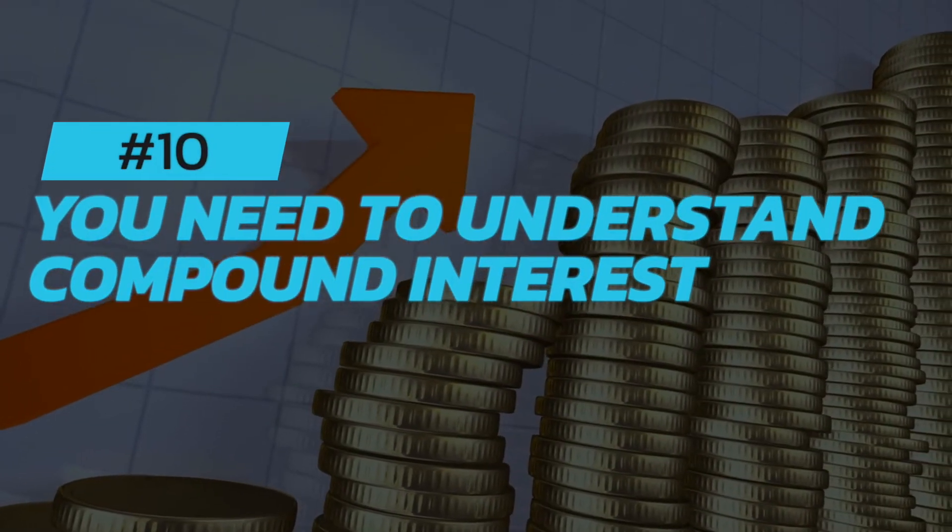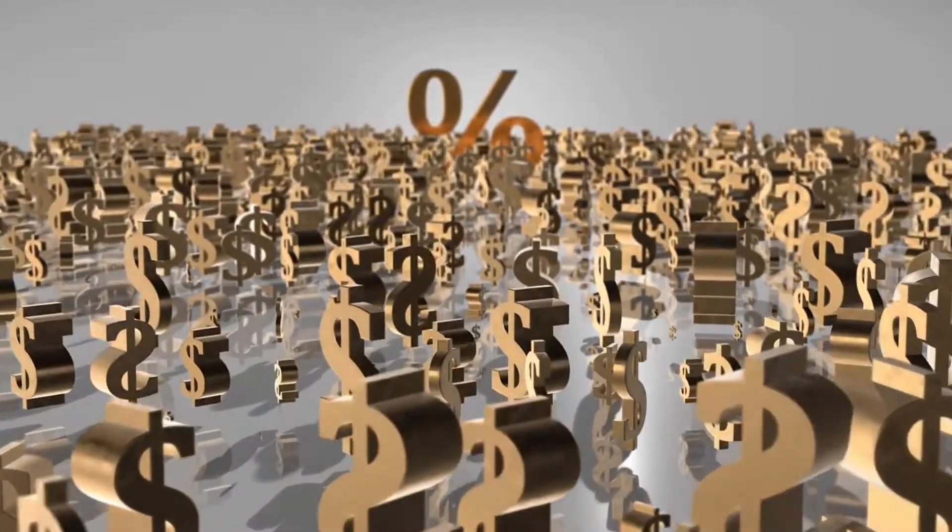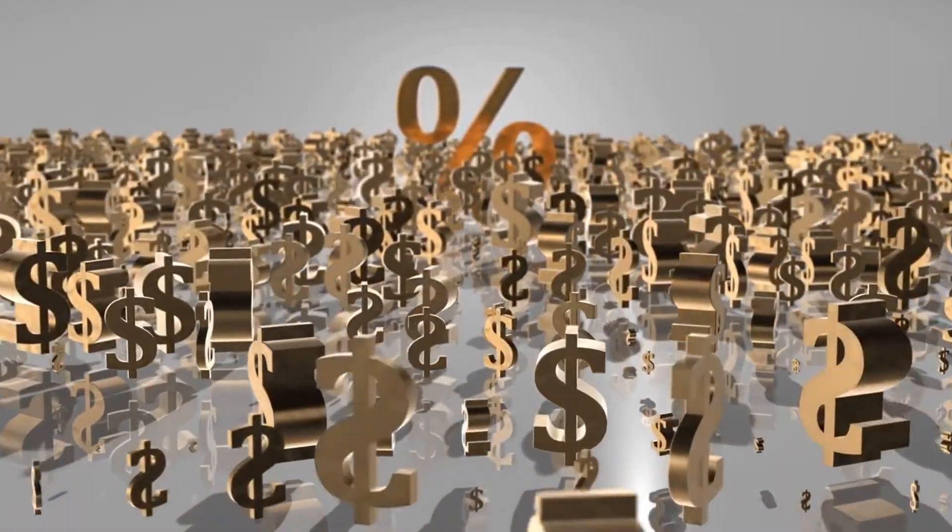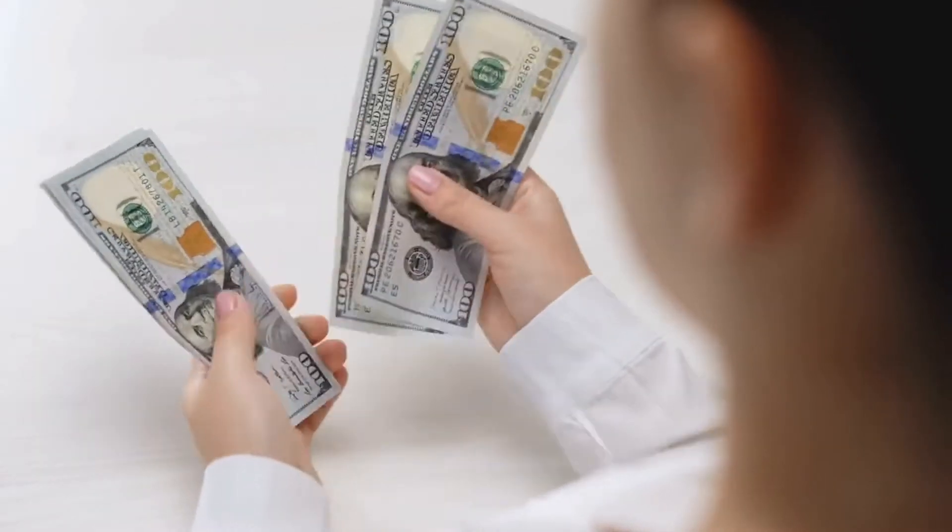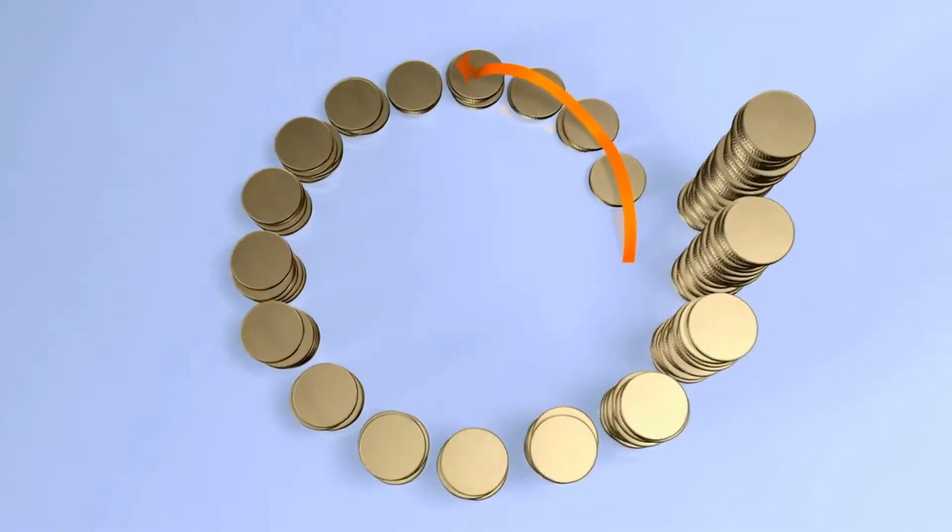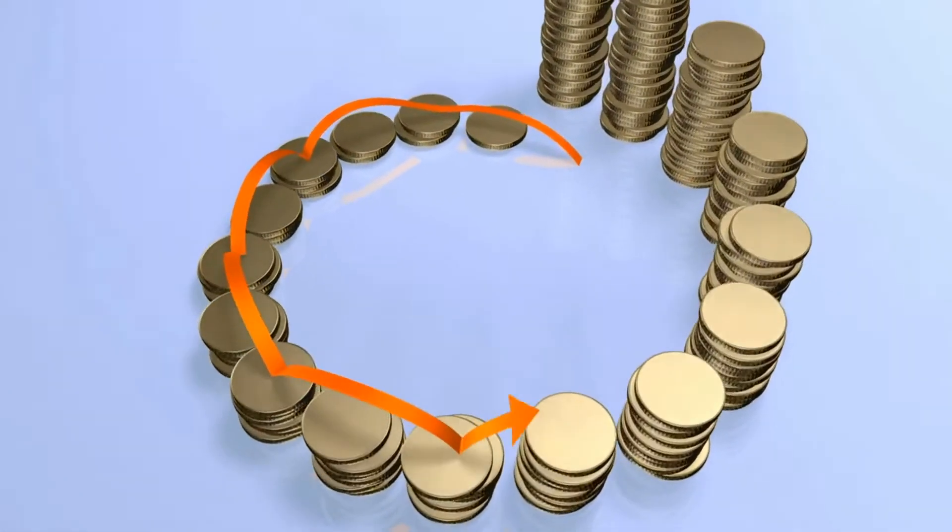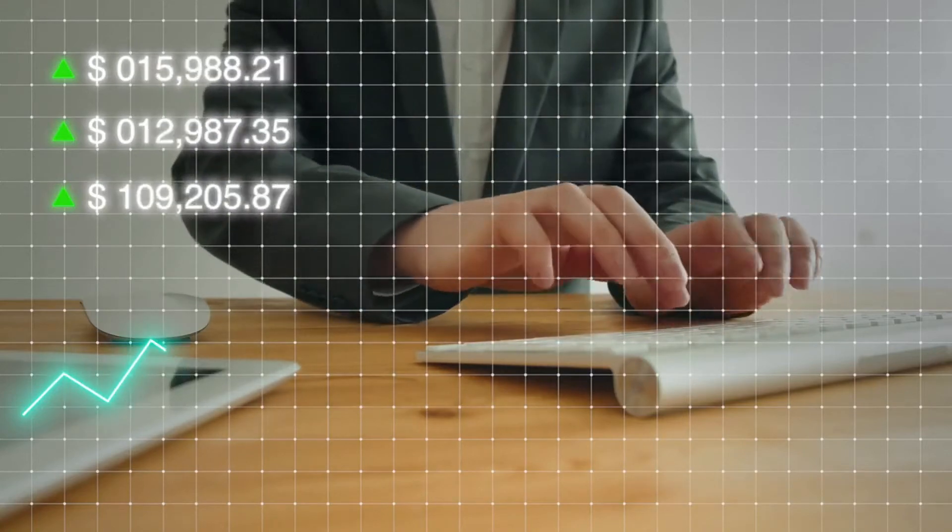Number ten: You need to understand compound interest. Compound interest is when you earn interest on your investment, and then you earn interest on that interest. It's a powerful tool that can help you grow your money. The sooner you start investing, the more time your money has to grow. And the more money you have invested, the more interest you will earn.